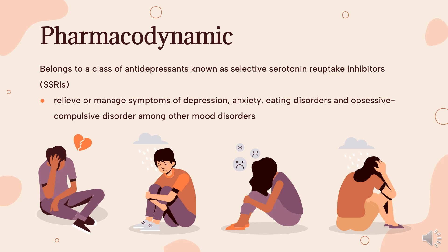SSRIs as a class have been associated with abnormal bleeding, particularly in patients receiving concomitant therapy with other medications affecting hemostasis, and with the development of serotonin syndrome. Use escitalopram with caution in patients with a higher-than-baseline risk of bleeding and in patients receiving concomitant therapy with other serotonergic drugs. Escitalopram may also cause a discontinuation syndrome with abrupt removal of the drug, and should be slowly tapered if discontinuation of therapy is warranted.